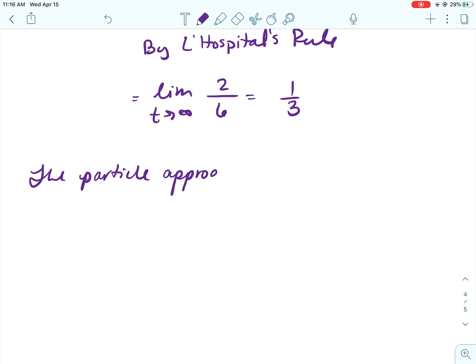So the derivative of the numerator is 2, the derivative of the denominator is 6, and that's going to simplify to 1 third.